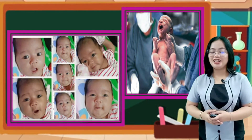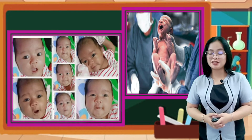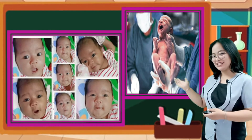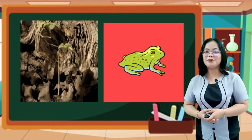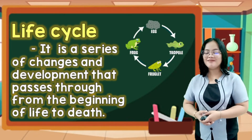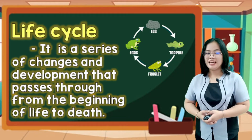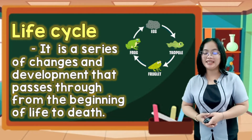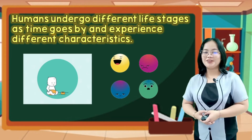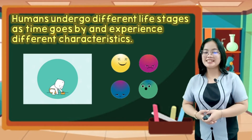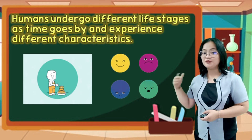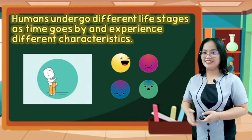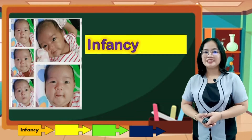All of us start from the time our mother gave birth to us, just like these cute babies. And just like humans, animals, as well as plants undergo different stages of their development. A life cycle is a series of changes and developments that passes through from the beginning of life to death. Humans undergo different life stages as time goes by and experience different characteristics — including physical, emotional, and others. Human life cycle begins with infancy.